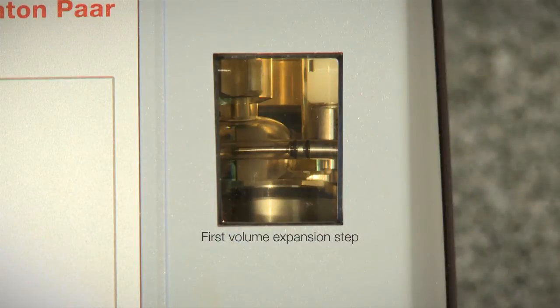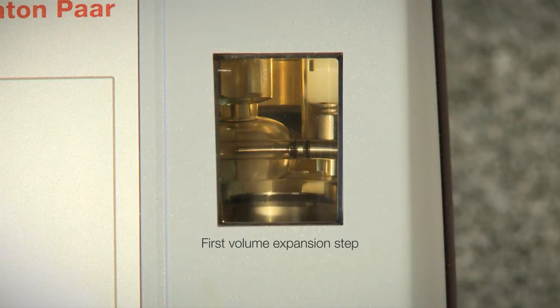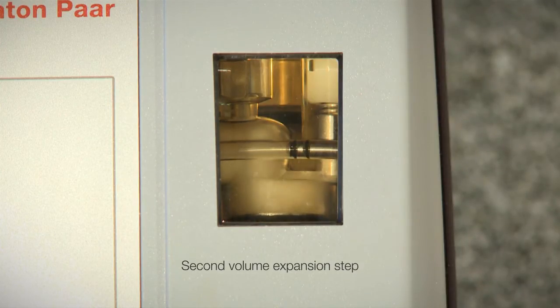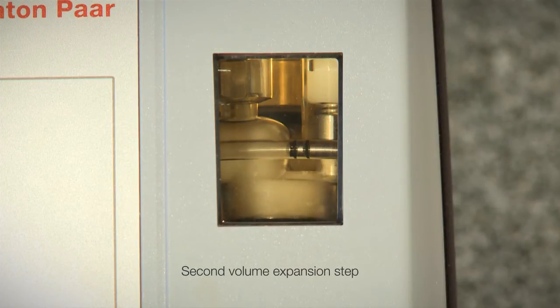After that, the CO2 measuring chamber is closed. The piston moves down and expands the volume for the first time. The pressure and temperature are measured. Then the piston moves down further and the volume is expanded a second time. The pressure and temperature are measured once again.